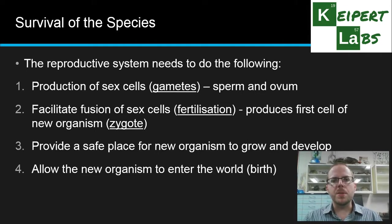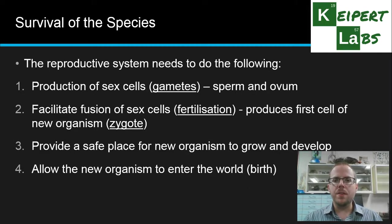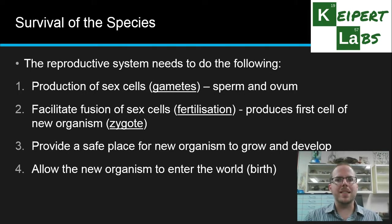The reproductive system also needs to provide a safe place for that new organism to develop and grow — the fetus growing inside the woman's body. And then finally, once that fetus is ready to enter the world, there's a way for that to happen, which is what we call birth through the process of labour.